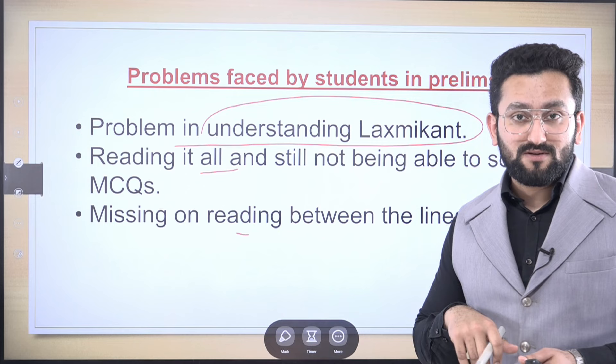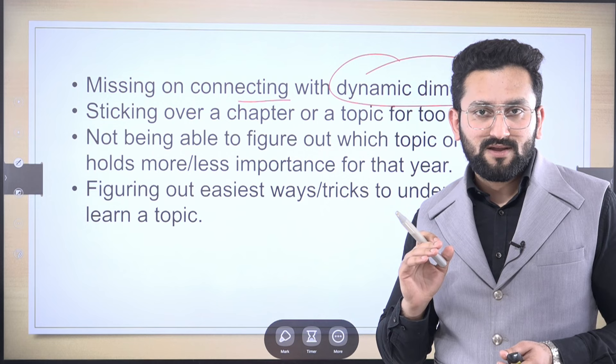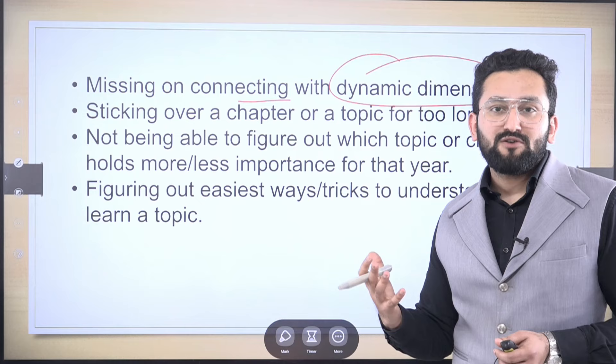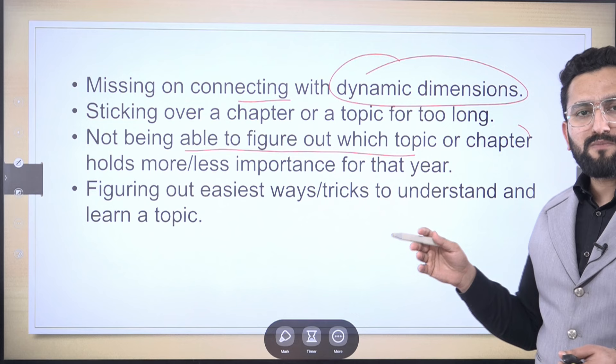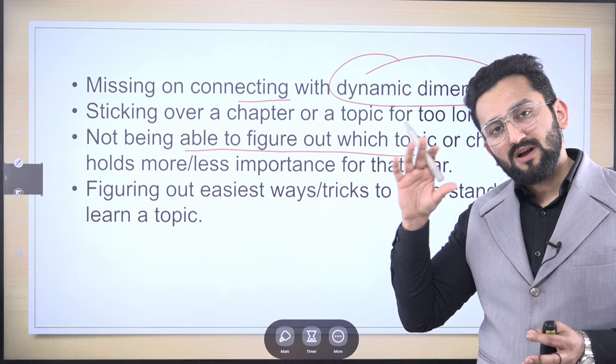Another problem is missing on connecting with dynamic dimensions. Indian polity is static as well as dynamic. Static means something which is written in some provision or some law. Dynamic means updates — and updates need to be on your tips too. Sometimes students are not able to rationalize their time, meaning which topics are more important. When you have a clear eye on the dynamic aspect, if certain provisions are in use again and again, it is a clear indication that we can expect one question from there.